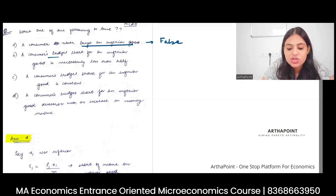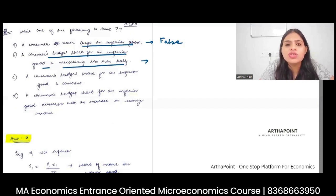A consumer's budget share for inferior good is necessarily less than half. Again, there is no rule which tells how much should be your share in the budget for inferior good. It can be 1%, it can be 10%, it can be 50%. So there is no reason why it should exactly be less than half or equal to half or whatever.